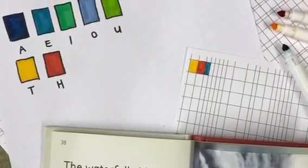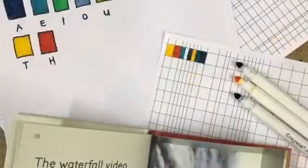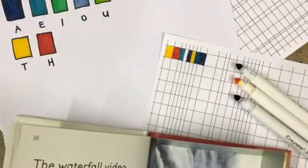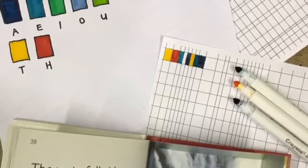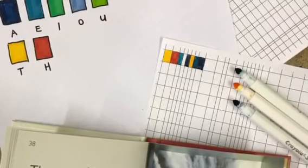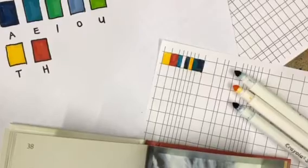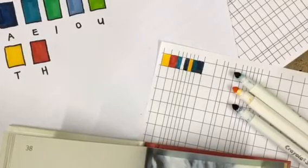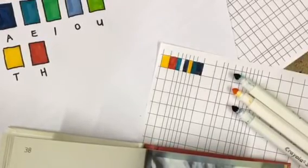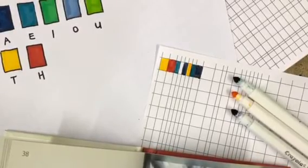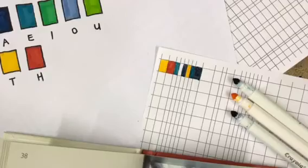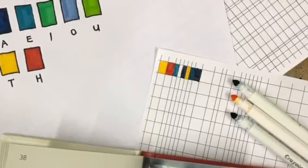The next word on my page is the word 'waterfall,' which according to my code square grid is represented by dark blue, yellow, mid-blue, and then dark blue again. The letter A is the dark blue, the letter T is the yellow, then the E is mid-blue, followed by the A which is dark blue again.